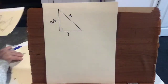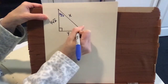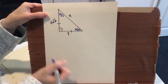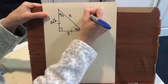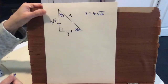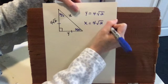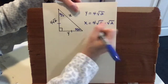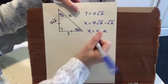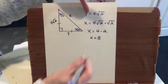We have a 45-45-90 right triangle. Since 4 root 2 and Y are identical legs, Y equals 4 root 2. To find X, the hypotenuse, we take the leg 4 root 2 and multiply by root 2. Root 2 times root 2 is 2, so X equals 4 times 2, meaning X equals 8. We now have both Y and X.